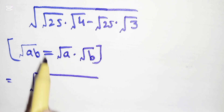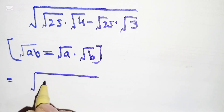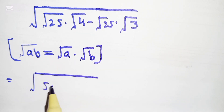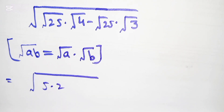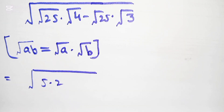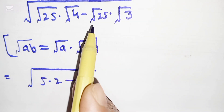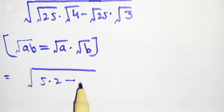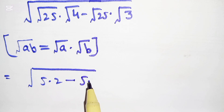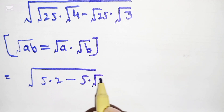√25 can be written as 5, and √4 can be written as 2. Then minus: √25 can be written as 5, times √3.